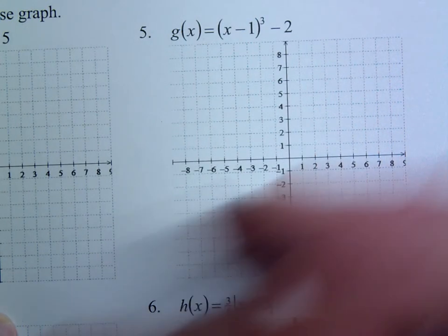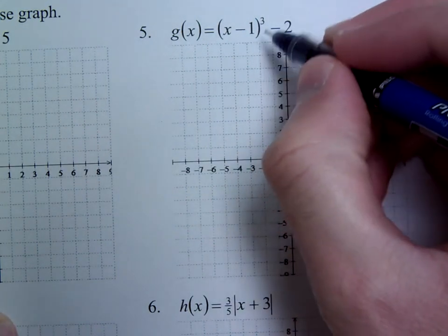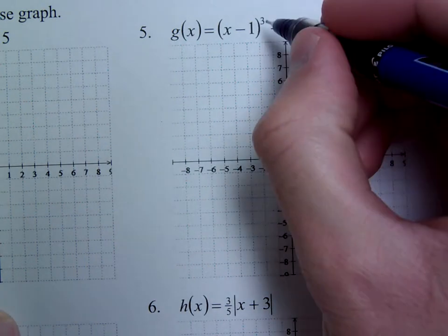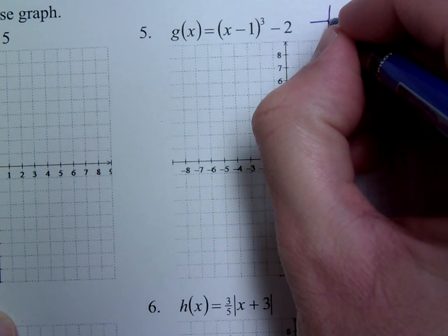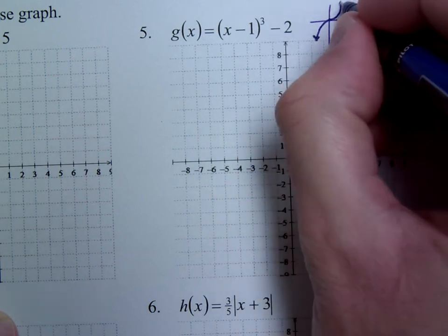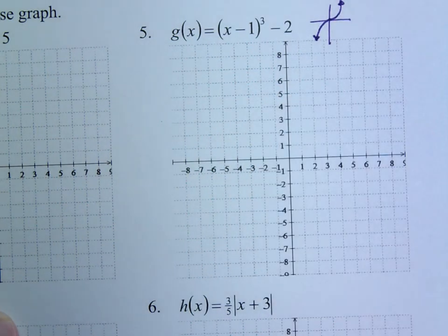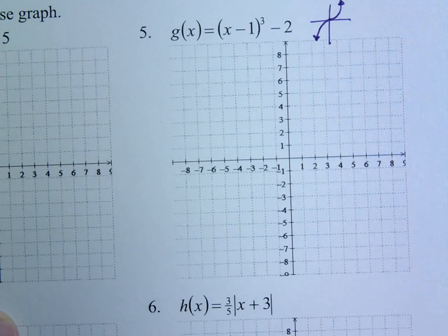In this next function, we see that we have x minus 1 to the third minus 2, so the cube here tells us that we should have a shape that looks like this. So it's just a matter of putting that shape in the right spot.